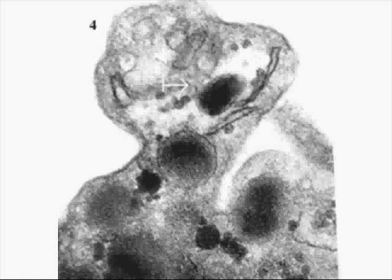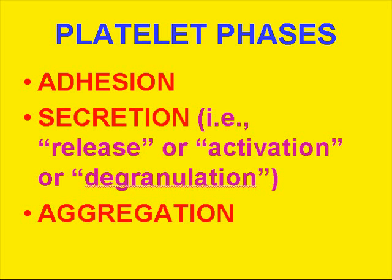Let's talk about the phases of primary coagulation, which we call platelet plug formation. First, platelets have to adhere to the ECM. Then they have to secrete or release the contents of their granules — also called activation or degranulation. And thirdly, they have to aggregate to form the big platelet plug — that is what we call primary coagulation. Remember, it has to have adhesion before secretion, and secretion before aggregation.